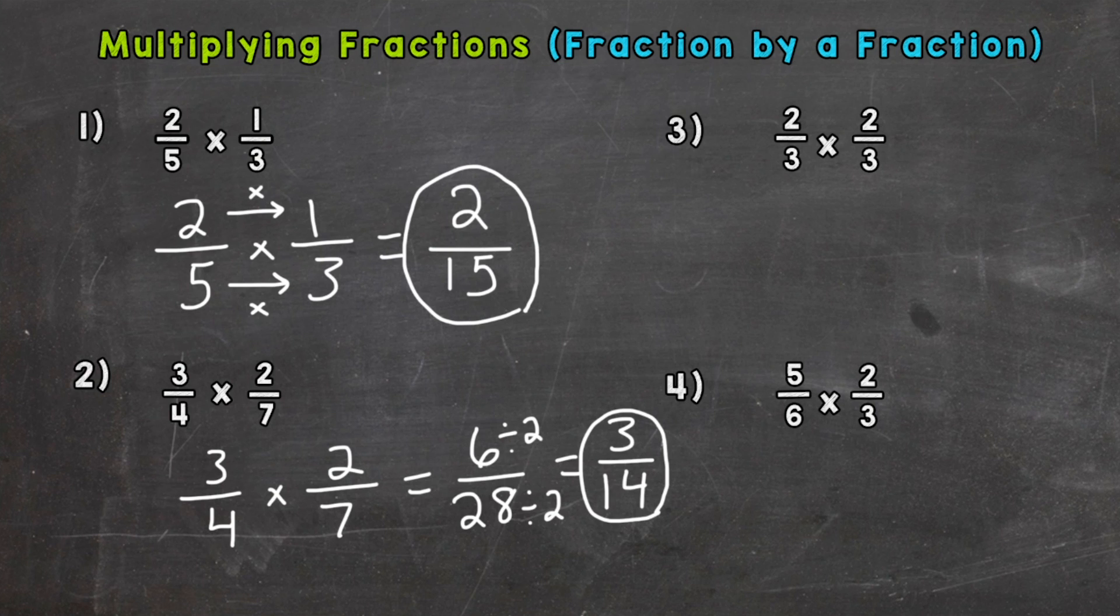All right, number three: two-thirds times two-thirds. Again, straight across—numerator by numerator is four, and then denominator by denominator, three times three is nine. So we have four-ninths. The only common factor between four and nine is one, which means we are done. We cannot break this fraction down anymore. Cannot be simplified, so we're done: four-ninths.